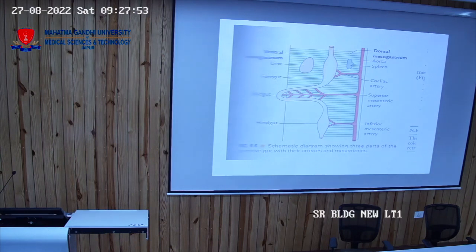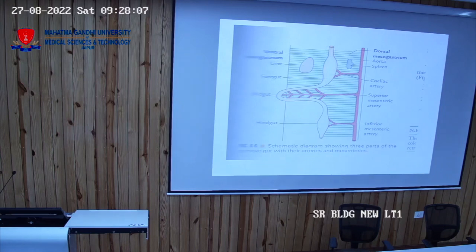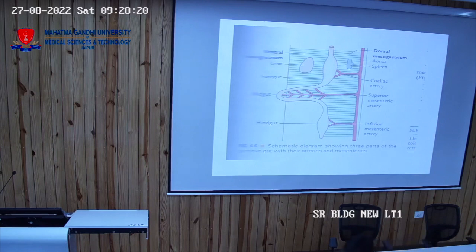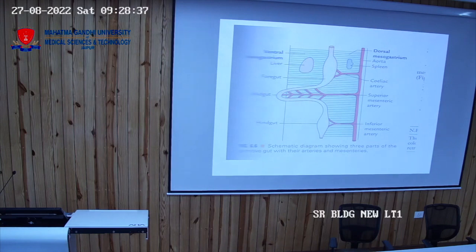The midgut includes the part of the duodenum below the opening of the common bile duct, jejunum, ileum, cecum, appendix, ascending colon, and the transverse colon up to its right two-thirds. The hindgut includes the left one-third of the transverse colon, descending colon, sigmoid colon, rectum, and the upper half of the anal canal.